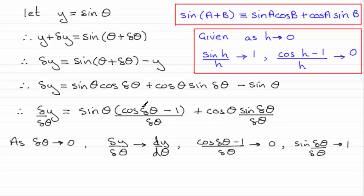So what we've got here is this tends to 0 and sine theta multiplied with 0 is 0. And this result here is 1. So cosine theta times 1 is cosine theta. So therefore what we've got is that dy by d theta is equal to cosine of theta. So you can see that by differentiating sine theta with respect to theta the result then is cosine theta.